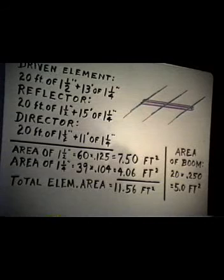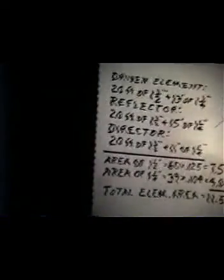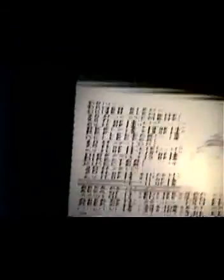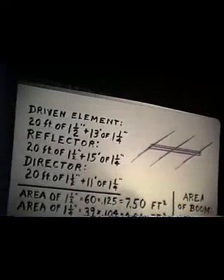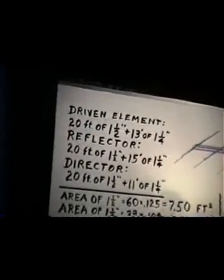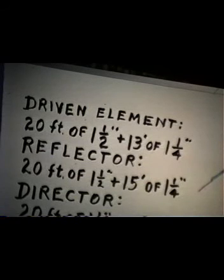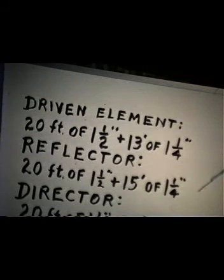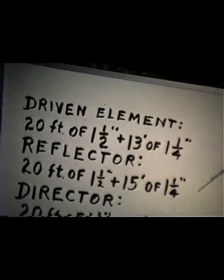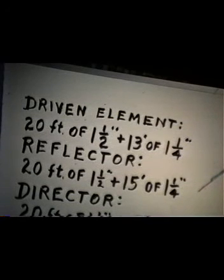Let's take the case of a beam antenna. Suppose we have a fellow named John Q. Ham who decided to build his own Yagi. He makes the driven element consisting of 20 feet of one-and-a-half-inch aluminum pipe with an additional 13 feet of one-and-a-quarter-inch tubing that slips inside it with clamps. The director will be 20 feet of one-and-a-half-inch with 11 feet of one-and-a-quarter-inch — slightly shorter than the driven element — and the reflector, a little longer, has 15 feet of one-and-a-quarter-inch tubing.